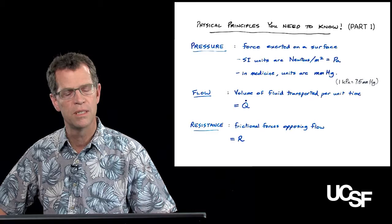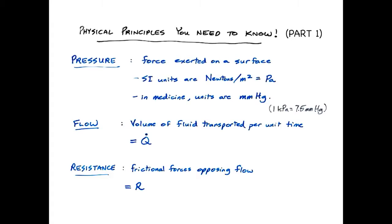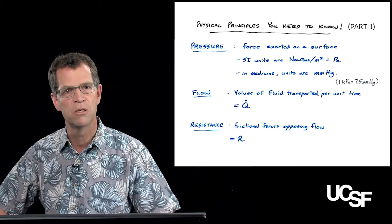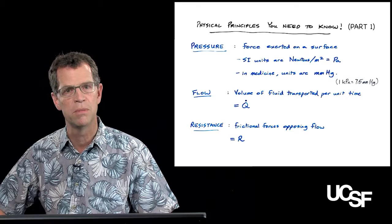Flow is the volume of fluid transported per unit time — for example, liters per minute — represented as Q with a dot over it. Resistance is a general term for all the frictional forces that oppose flow in blood vessels or the heart. Resistance is determined by things like the diameter of a blood vessel or the size of a heart valve through which the blood is flowing.